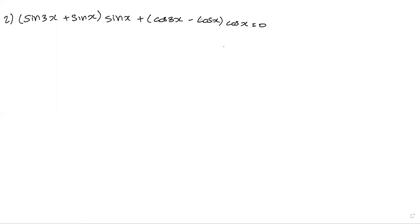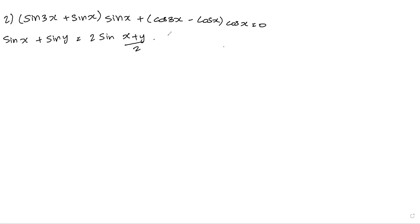Second question: sin 3x plus sin x, into sin x, cos 3x minus cos x, into cos x. First formula: sin x plus sin y equals 2 sin of (x plus y divided by 2) into cos of (x minus y divided by 2).